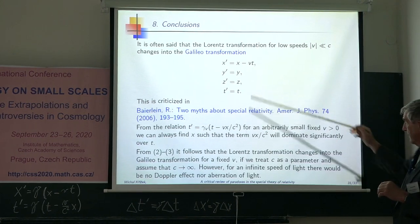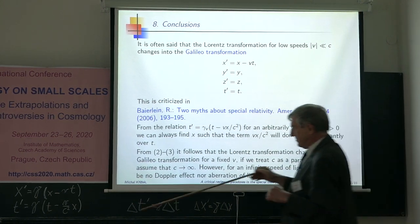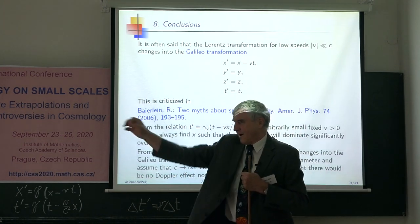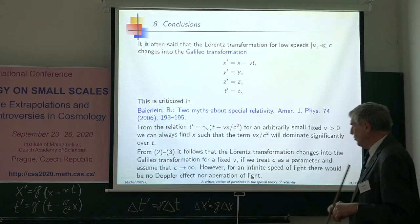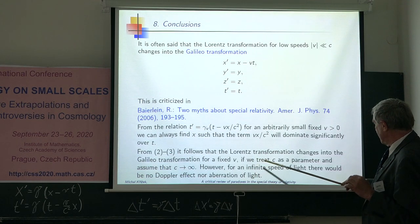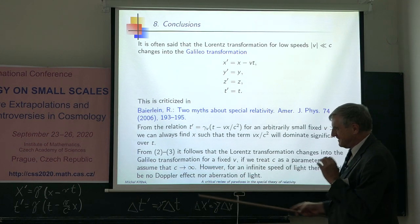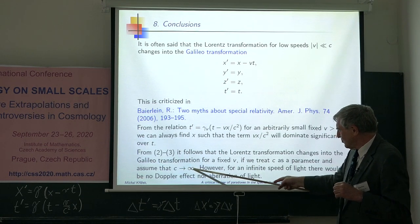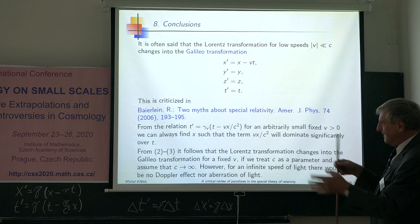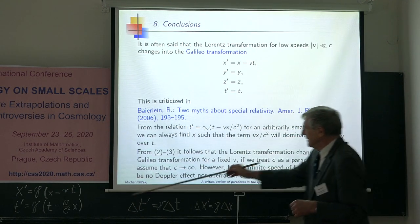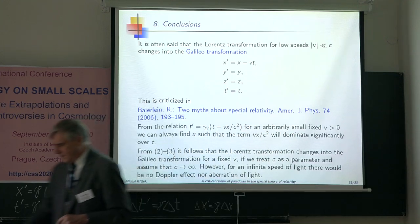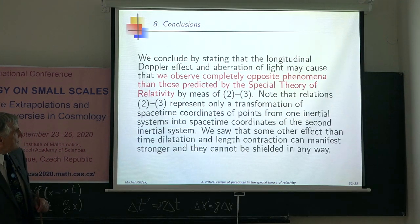It is not true that Galileo transformation for small speeds reduces to that, because if your x is very far from the origin, it is not true. But if c is considered as a parameter and c tends to infinity, then this transformation changes to that transformation.